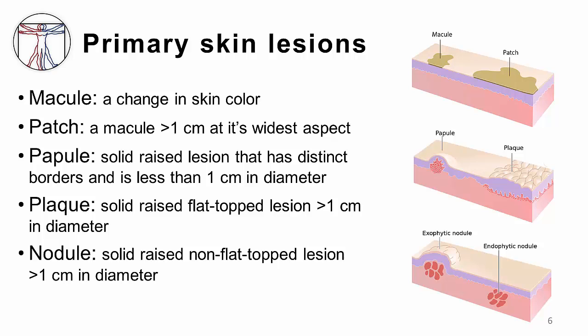If a papule is larger than one centimeter but is not flat, it is called a nodule. The depth of involvement is another characteristic that differentiates a nodule from a papule. While papules are typically more superficial, nodules may arise from the epidermis, dermis, or the subcutaneous tissue. Endophytic nodules may start deep or more superficially but then grow inwards into the tissues, while exophytic nodules grow outward beyond the layer from which they originate.